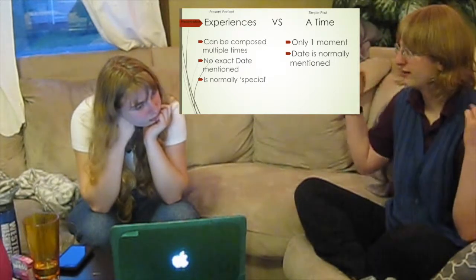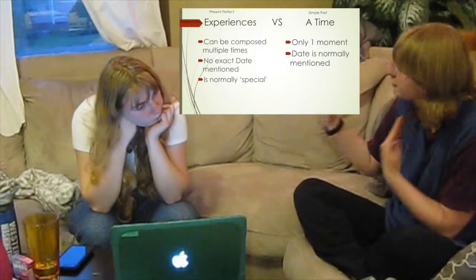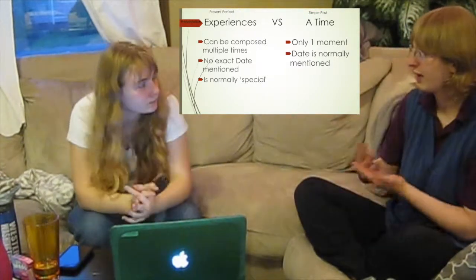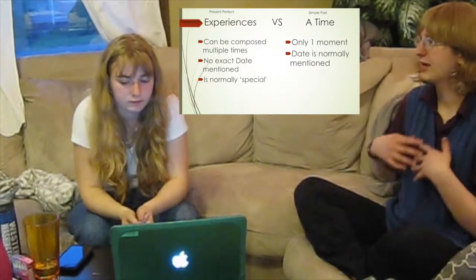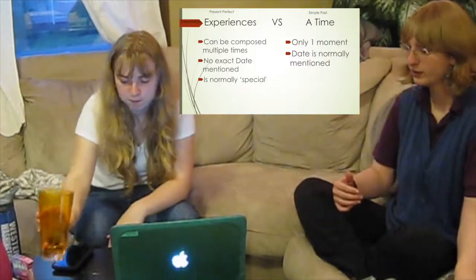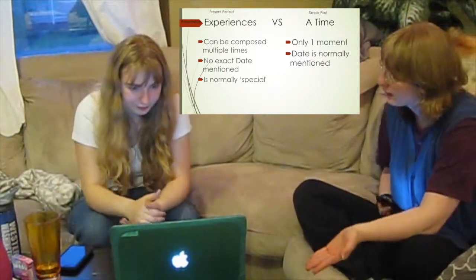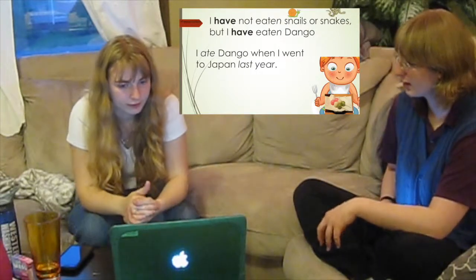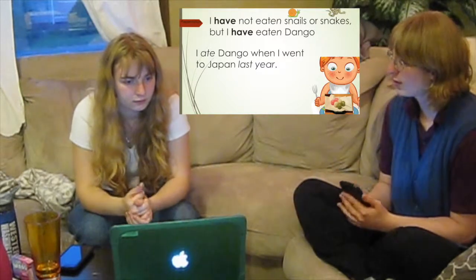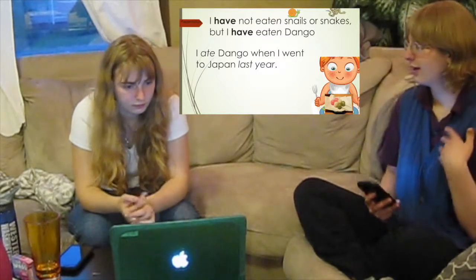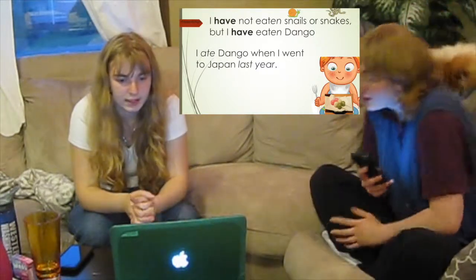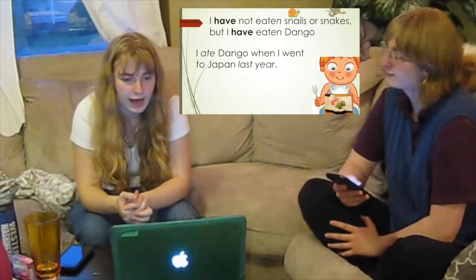Experiences are normally something special. You wouldn't ask someone, have you ever been born? Because that's obvious — everybody was given birth to. So it's something where there's a possibility they could say no. Experiences are told in the present perfect tense, and a point in time is told in the simple past. Which of these is an example of present perfect? I have not eaten snails or snakes, but I have eaten dango. That's correct.